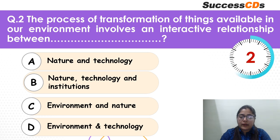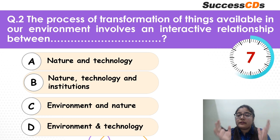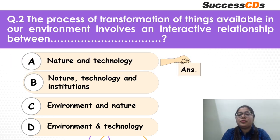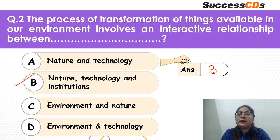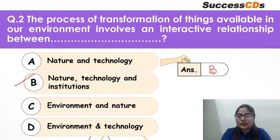Go ahead and tell me — process of transformation of things that are there in the environment, how can you transform them? The correct answer here is nature, technology and institutions. These three things combined can transform anything. That is why B is your correct answer.